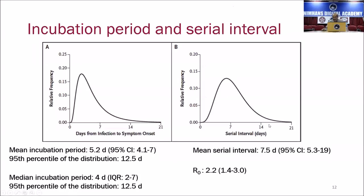In epidemiological language, R0 refers to the probability of how many patients an infected patient can pass the infection to. Currently, the R0 varies between 2.2 to 4 in various parts of the world. It is only an indicator of disease spread from one infected individual to others.